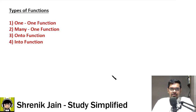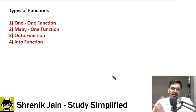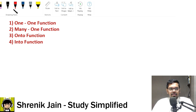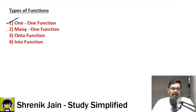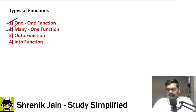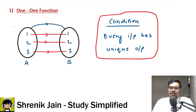In today's class we are going to study about types of functions. In total there are four types: one-one function, many-one function, onto, and into function. But in today's class we are going to study one-one and many-one function in depth. Let us start the lecture with the very first topic — one-one function.